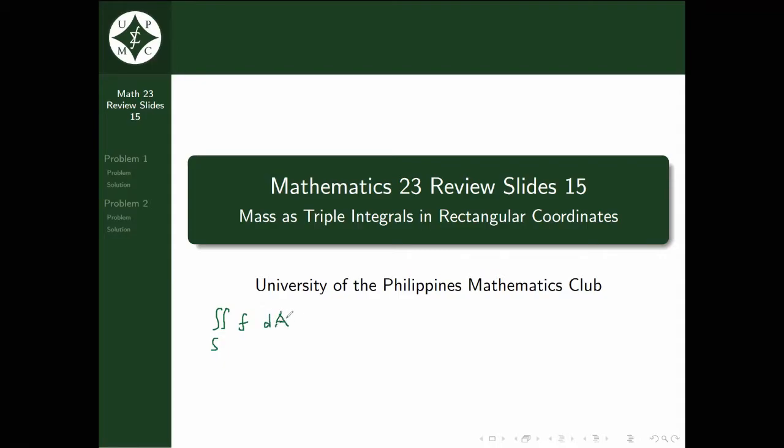For triple integrals, it's the same thing, just with a bit more added. We have three integral symbols over a solid G, and then some function f, dV, where dV is now dx, dy, dz.